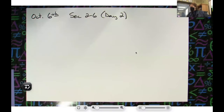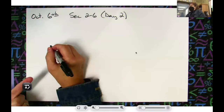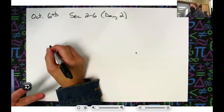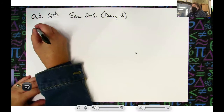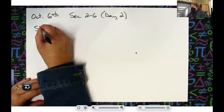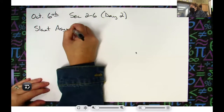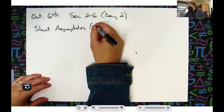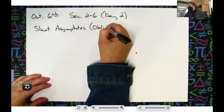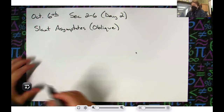We did horizontal asymptotes yesterday, we did vertical asymptotes — those were pretty easy. You had things to memorize for horizontal and an algebraic procedure for vertical. Now we're going to start doing slant asymptotes, which is what your book calls them. Some books will call them oblique, so if you see the word oblique it means the exact same thing as slant.